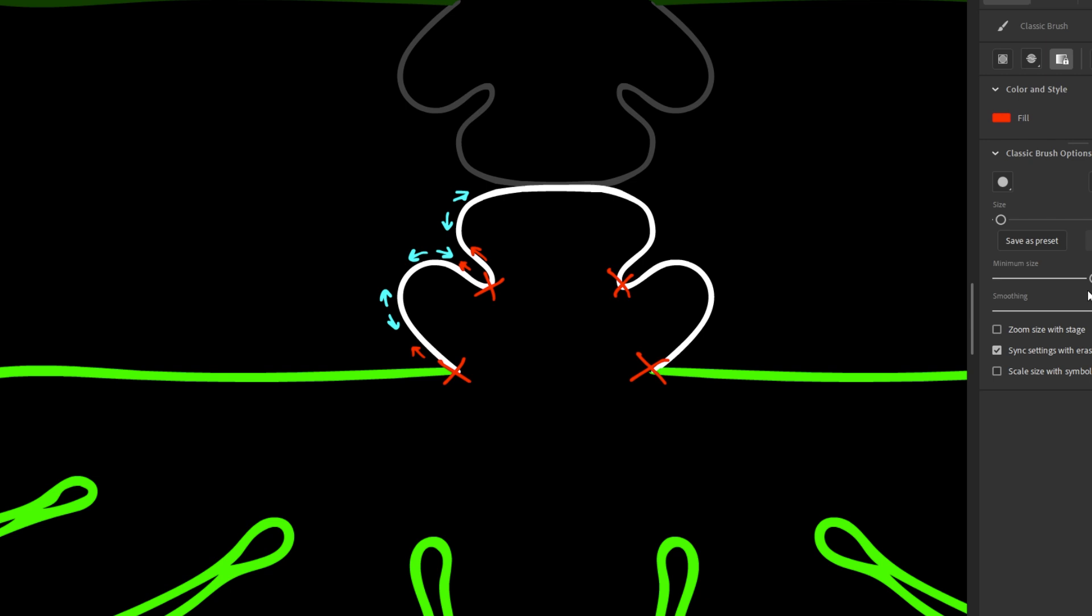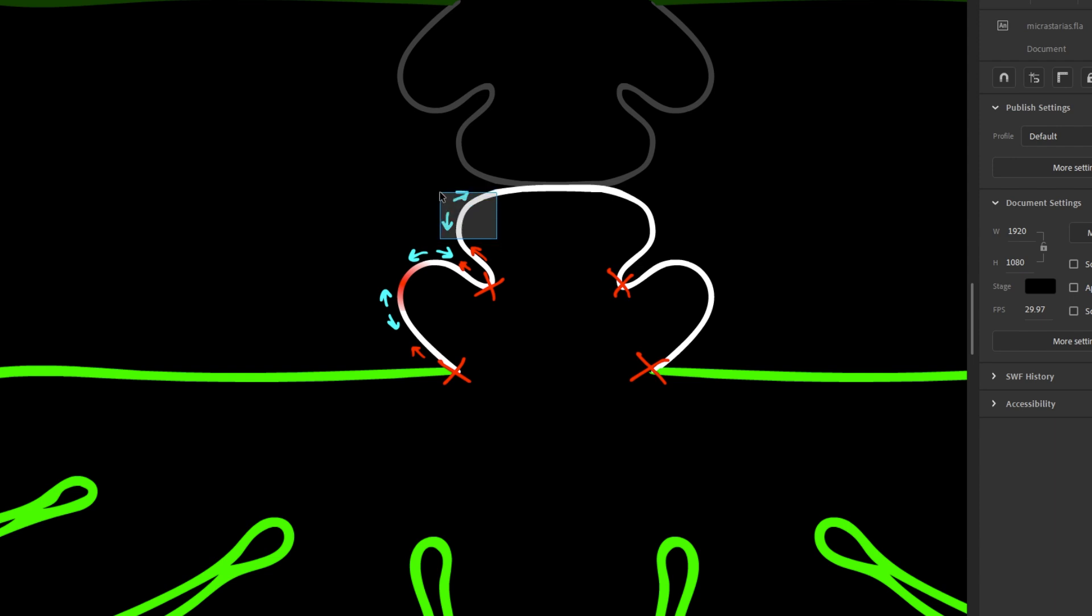That starts to form there, and then once that pressure gets high enough, it will also collapse and form the next. You will also see a dimple forming up here that I forgot to draw. So that will end up looking like this. And so on.